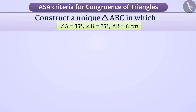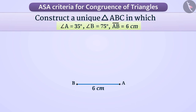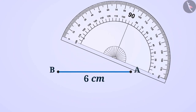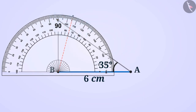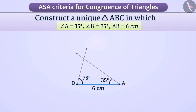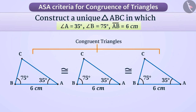In this case, first we will draw a line segment AB with length 6 cm. Next, with the help of a protractor, we will draw angle A which measures 35 degrees. Then using the protractor again, we will draw angle B which measures 75 degrees. From this, we will get point C as well as triangle ABC. No matter how many times we attempt to draw triangle ABC from the given measurements, in each case we will get a congruent triangle.